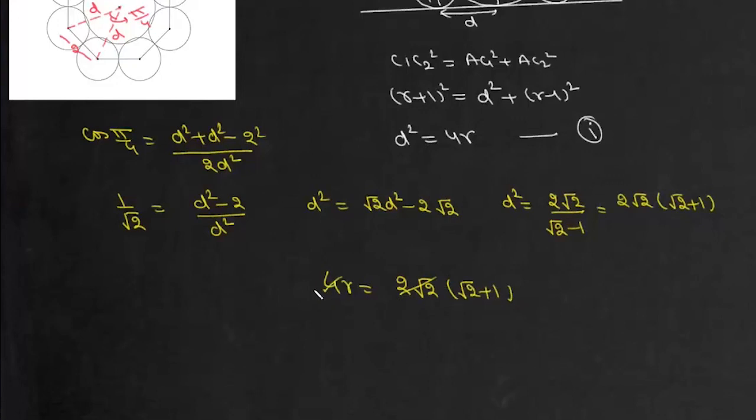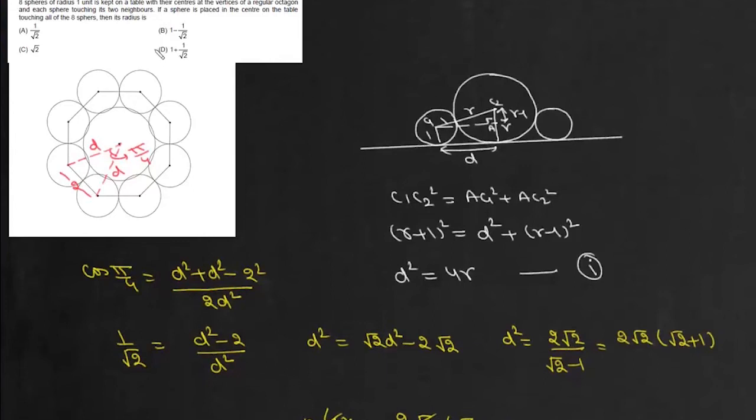Now 2√2 and 4 will cancel, so R = (√2/2)(√2 + 1) = 1 + 1/√2. That's option D.